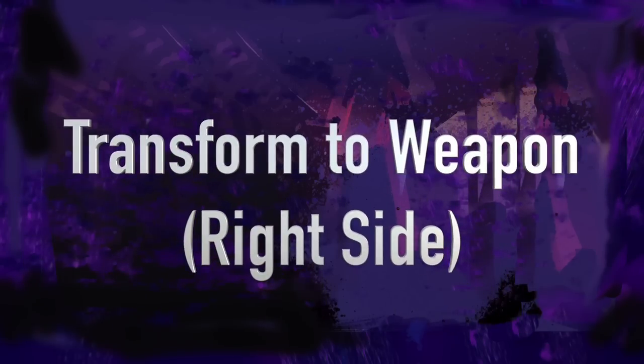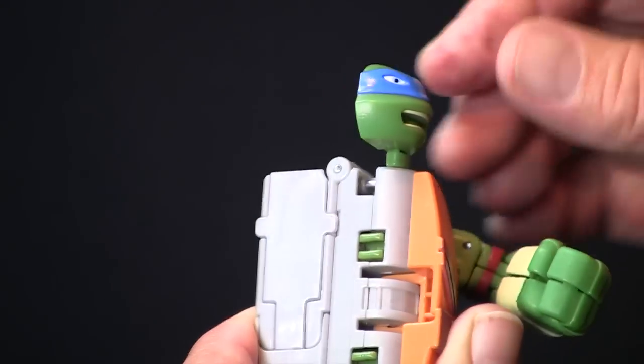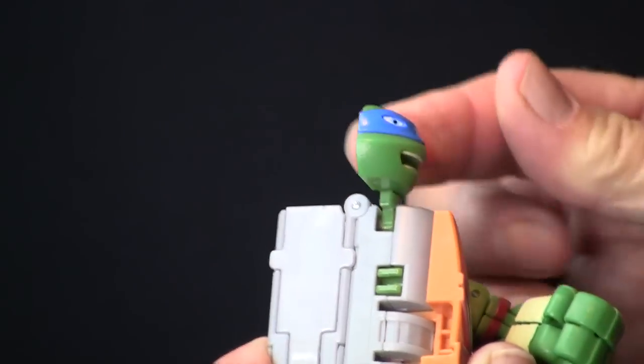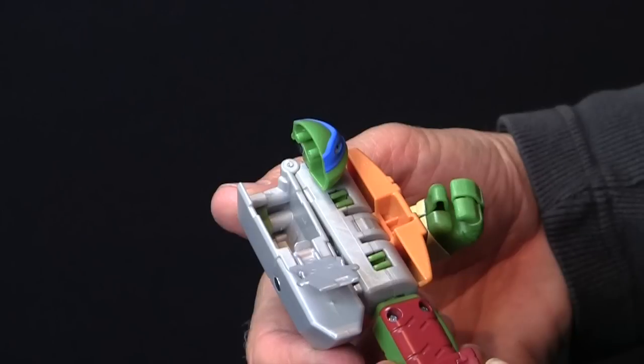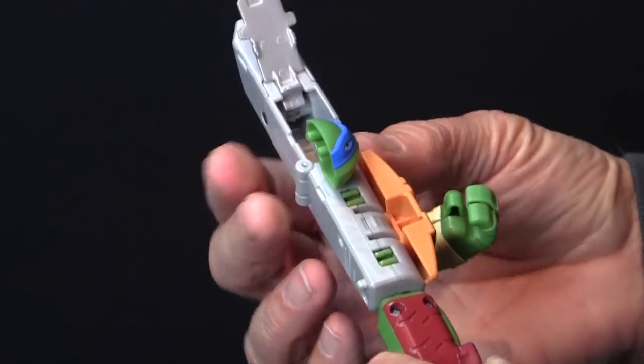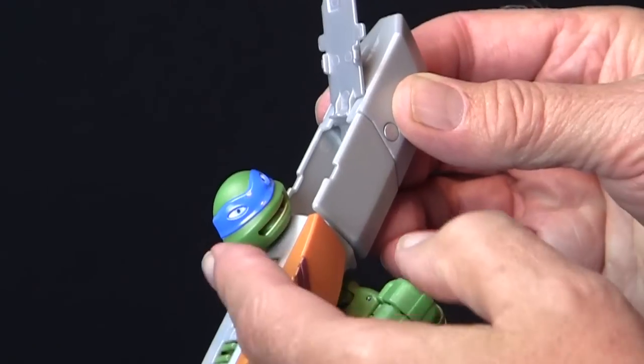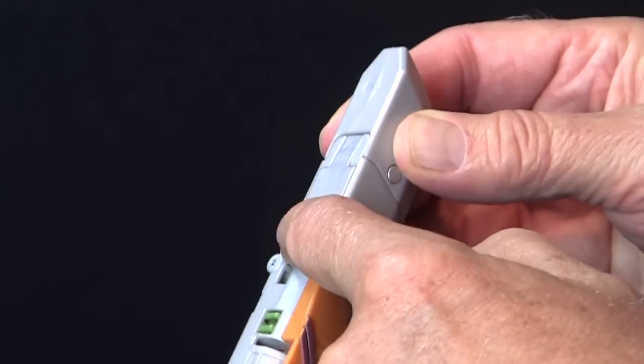We'll transform the right side first. Push Leo's head back and down towards you. Unsnap and open the compartment on his backpack. Then, lift up in the direction of the hinge and snap into place. Swivel Leo's head into the compartment and snap it shut.